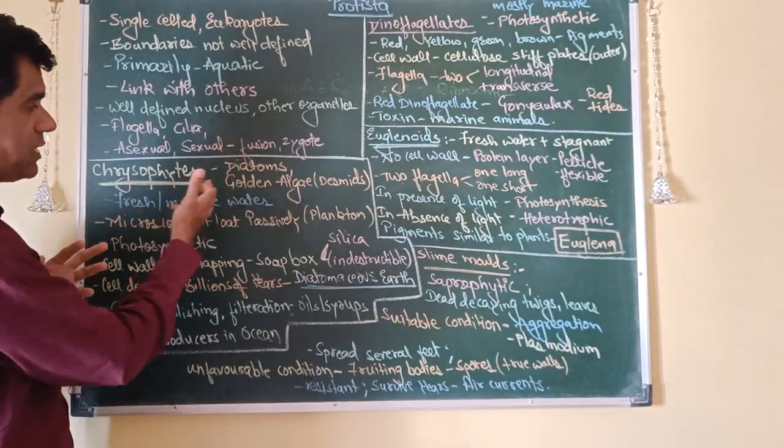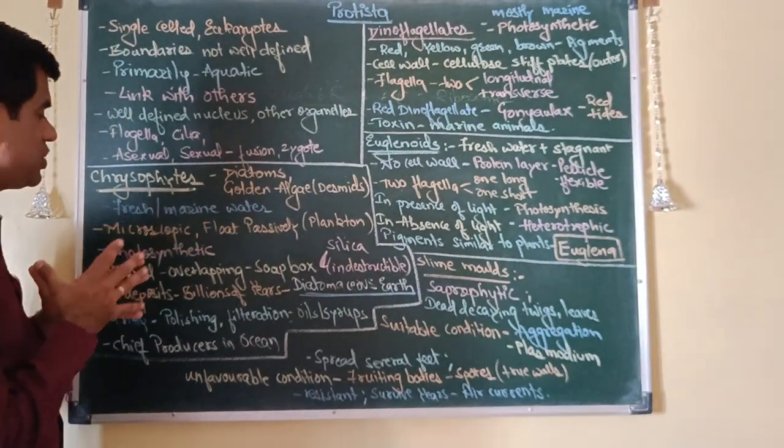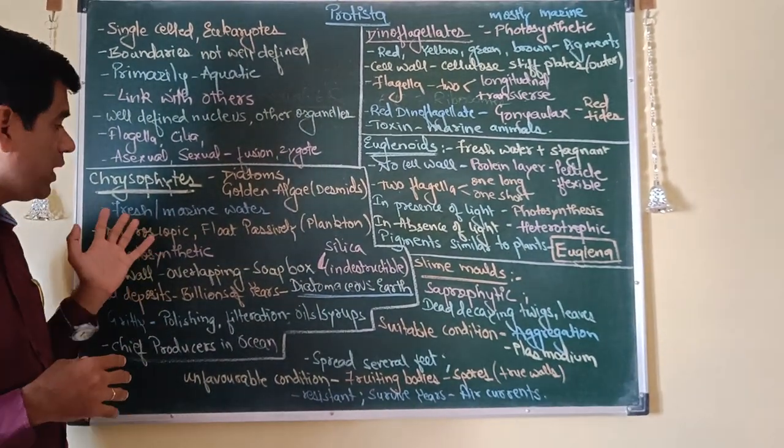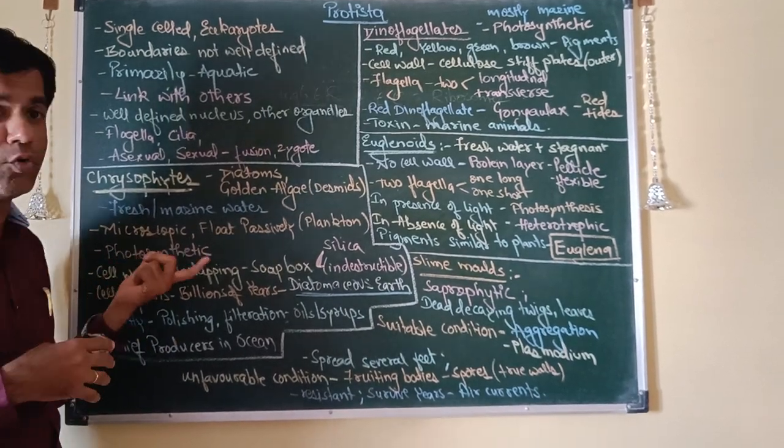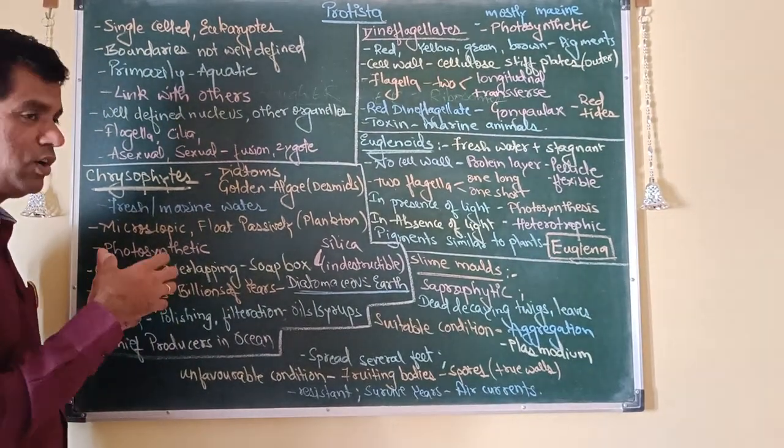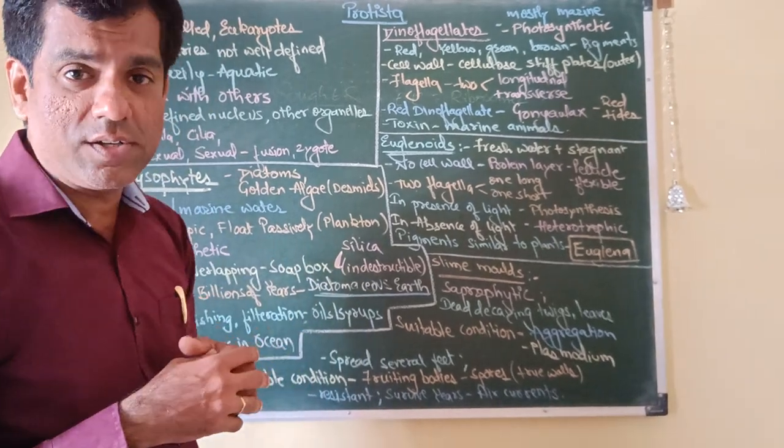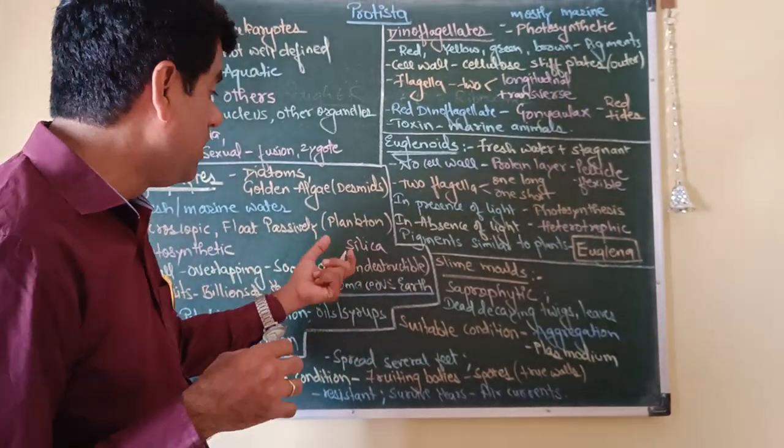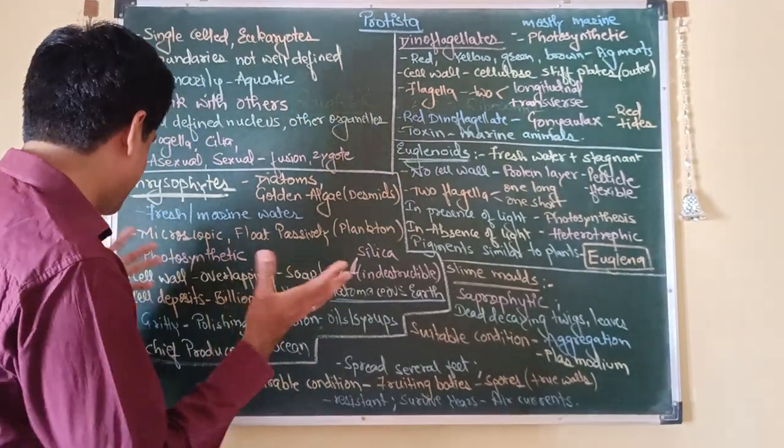Chrysophytes are diatoms and golden algae, that is your desmids. They are found both in fresh and marine water, they are microscopic, they float passively like planktons, and they are photosynthetic, so they are making their own food. They have a cell wall with overlapping surfaces which fit into each other like a soapbox, which are embedded with silica, which make them indestructible.